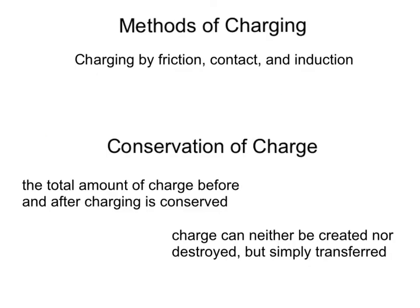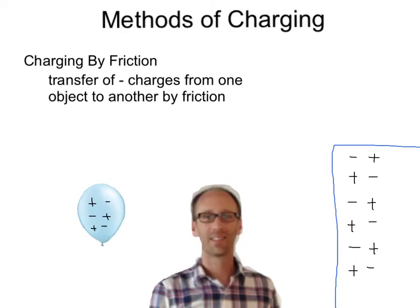In the next few slides, you'll see examples of the different methods of charging: charging by friction, contact, and induction. It's important to note that the conservation of charge is obeyed in these examples — that is, the total amount of charge before and after charging is conserved. Charge can neither be created nor destroyed; charge is simply transferred from one object to another.